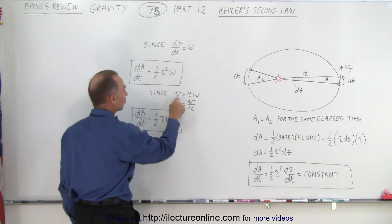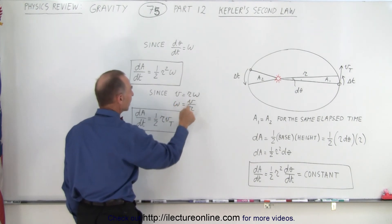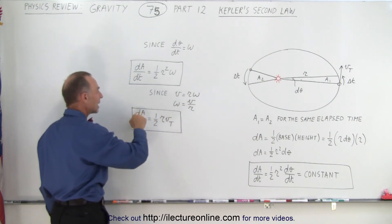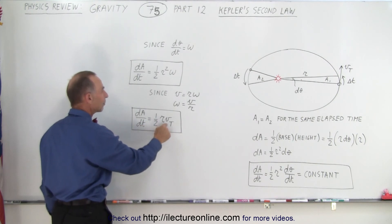Or since the tangential velocity is equal to r times omega, we can replace omega by v over r, and we can write that dA dt is equal to one half r times vt.